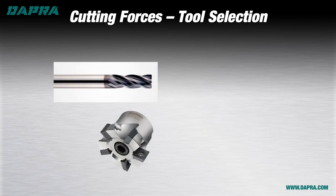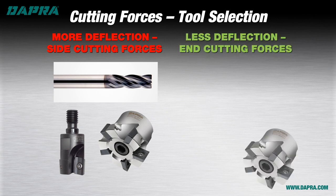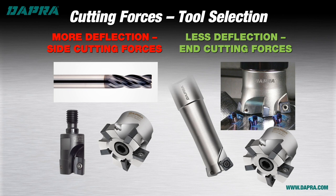If you have an upcoming long-reach application, choose your cutting tool type carefully. Tools with a 90-degree cutting edge, like regular end mills and APKT-style indexable tools, generate primarily radial or side cutting forces, making them a poor choice where long-reach tooling is needed. Tools with a very slight entering angle, like high-feed cutters, tend to generate more axial cutting forces than radial, making them a very good choice for long-reach milling applications.